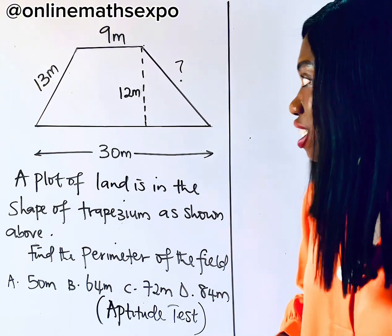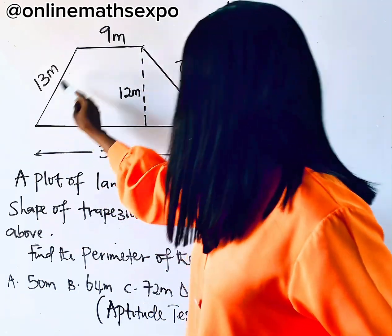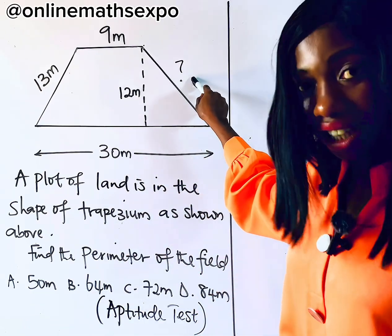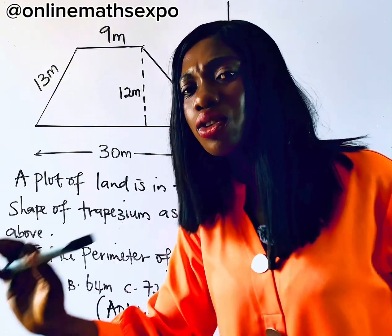Observe also that in this diagram, the question did not tell you that this length is the same as this. So in that case, here cannot be 13. I hope you are getting my explanations. Now, what will you do then?